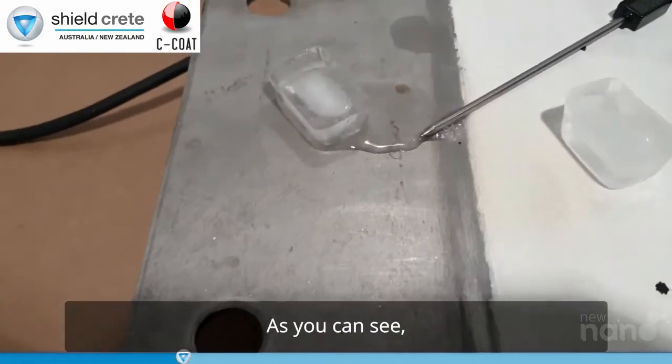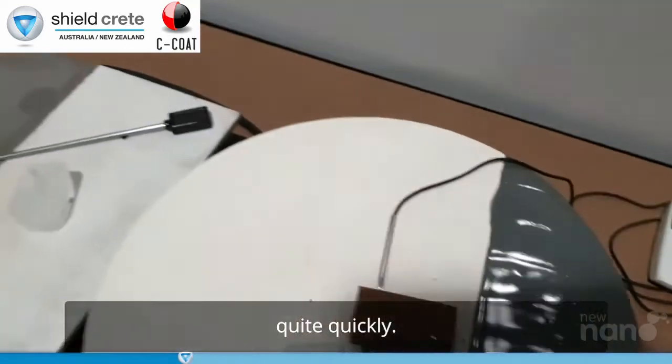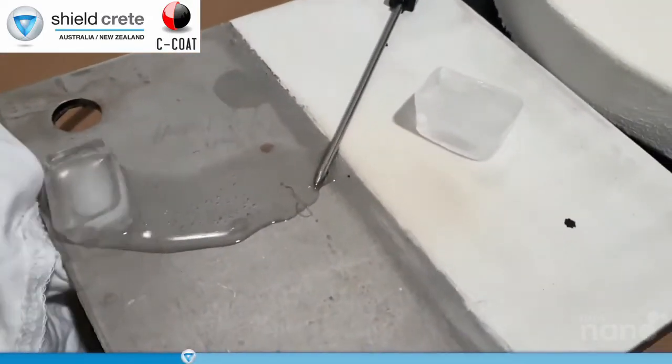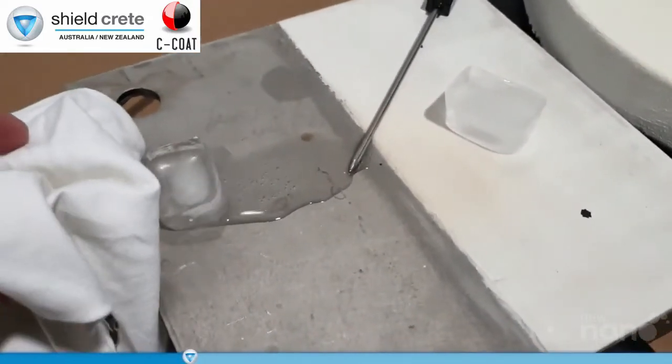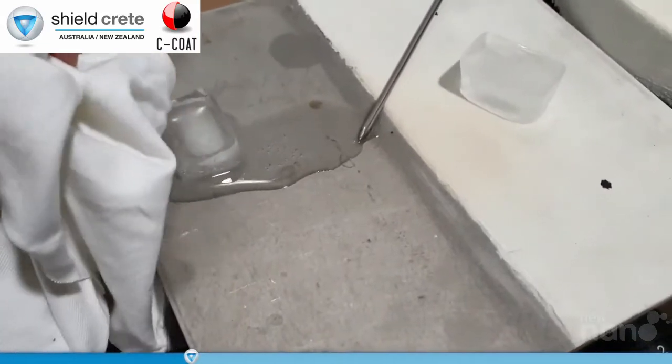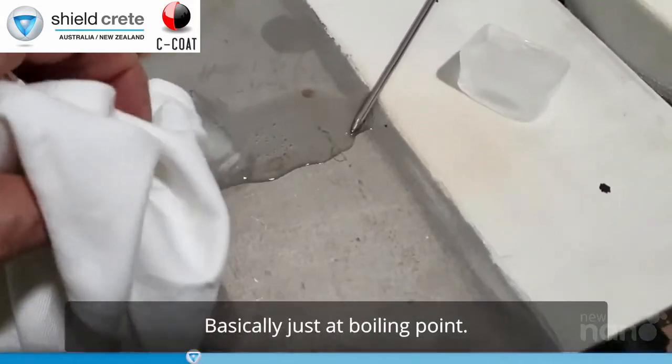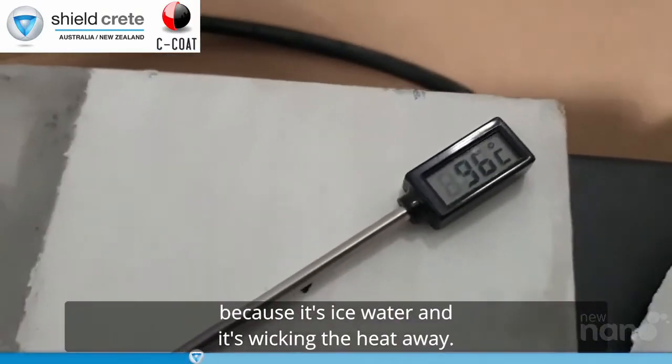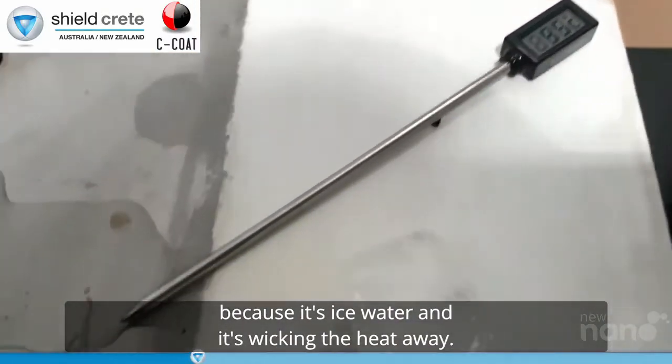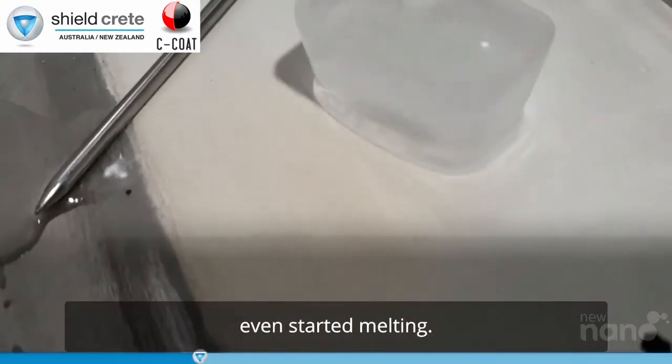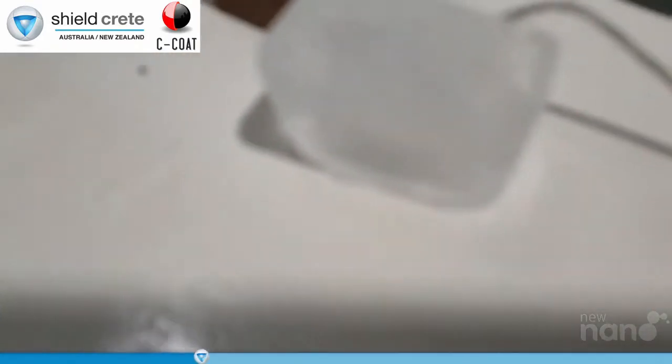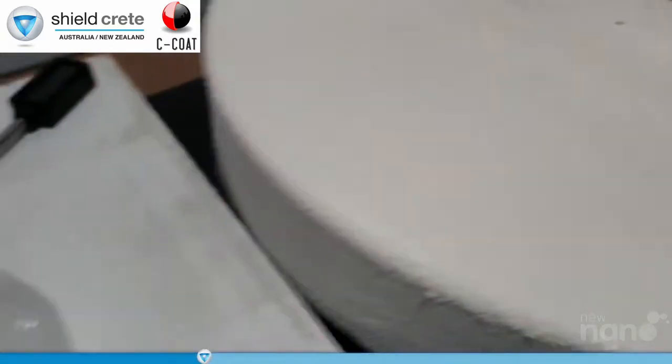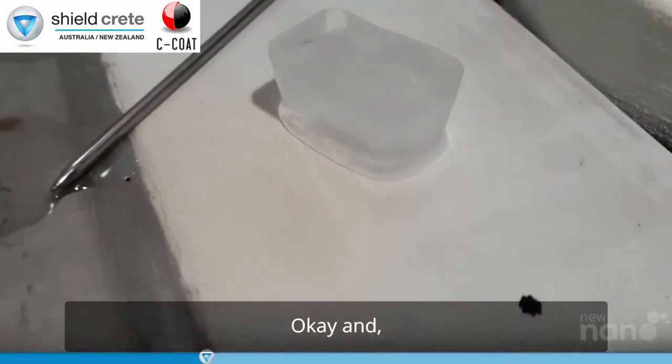As you can see, this one here is melting quite quickly. Basically just at boiling point. So you can see the temperature dropped a little bit there because it's ice water and it's wicking the heat away. But as you can see here, these are barely even started melting. Massive difference.